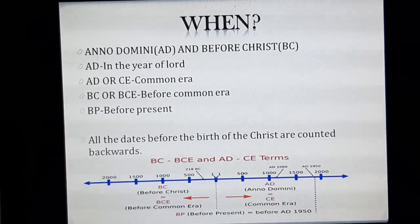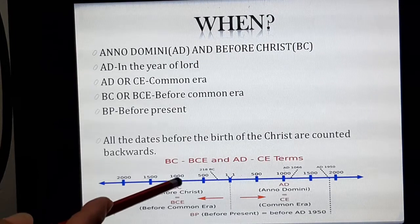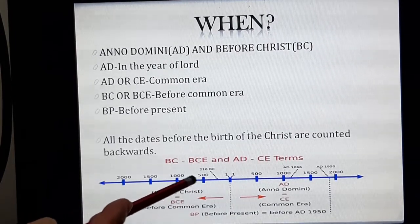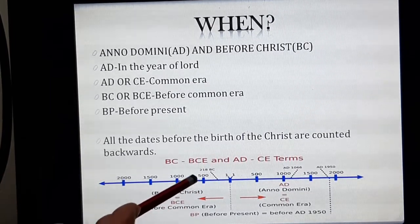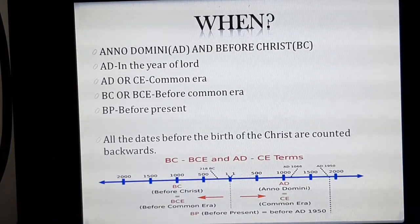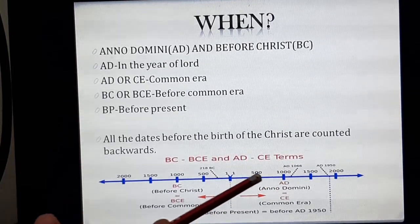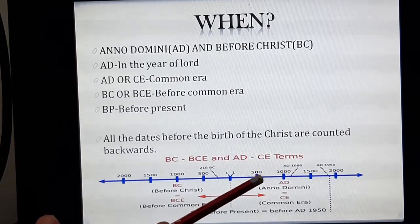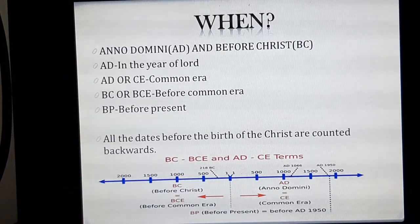If you want to find out the time period between two dates that are both in BC or both in AD, you subtract the smaller date from the bigger one. For example, 1000 BC minus 500 BC equals 500 years. In the same way, for AD dates: 1000 AD minus 500 AD also gives a time period of 500 years.